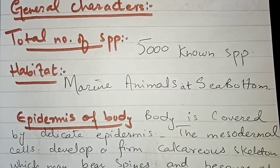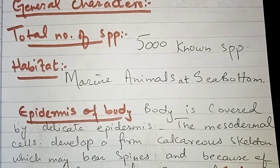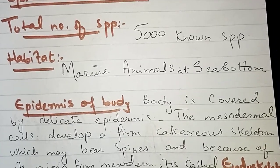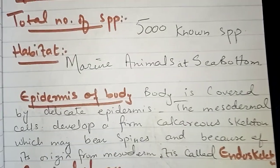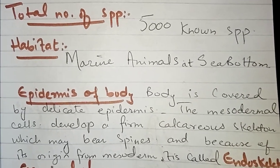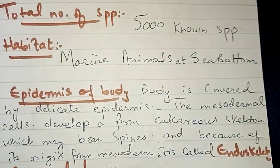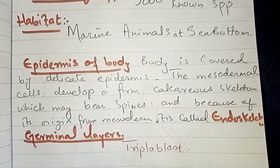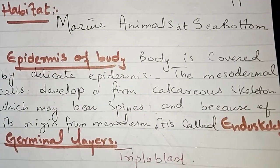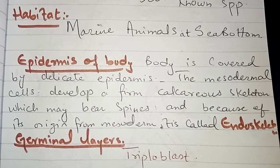If we talk about the characteristics of these animals, the first character is the total number of species — there are 5,000 known species, meaning there are other species we don't know about yet. Most of them are marine animals and they live at the bottom of the sea, in the depths and sediment.